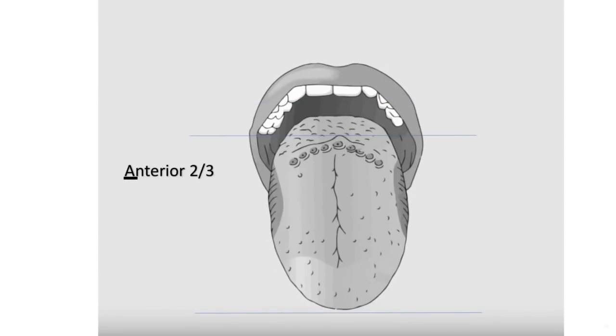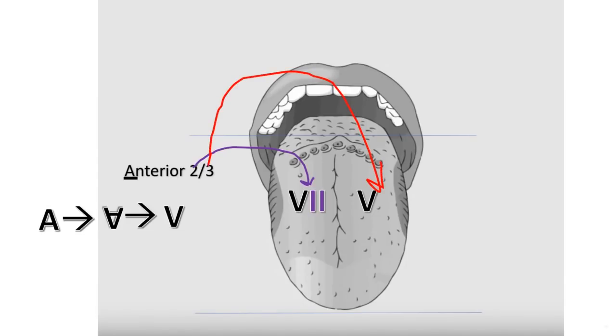Here we have the anterior two-thirds of the tongue. A good way to remember what innervates this part of the tongue is to flip the A upside down which looks like a V. And then when you take the two and bring it to this side of the V as roman numerals, you get V with the two lines and that's seven.